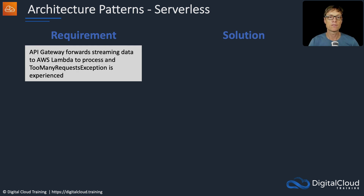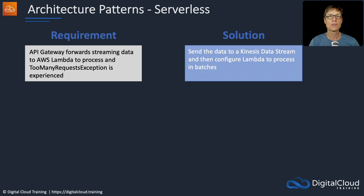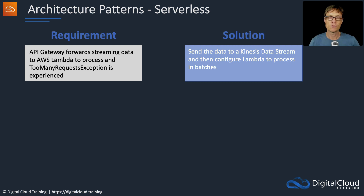Next, an API Gateway forwarding streaming data to Lambda is experiencing a 'too many requests' exception. When you see streaming data, you should start thinking about Kinesis Data Streams. In this case, you might send the data to Kinesis Data Streams and then configure Lambda to process in batches. The API Gateway may be sending bursting traffic, and there's not enough concurrency — so Kinesis acts as a decoupling layer, and processing in batches is more efficient.